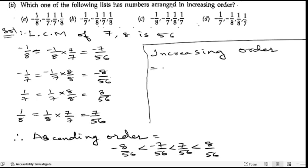In the simplest form, first will be -8/56, we got -1/7, next after that -7/56, that is -1/8, next we are having 7/56, that is 1/8, after that 8/56, 1/7. So here the option is -1/7, -1/8, 1/8, 1/7. So that is option D.